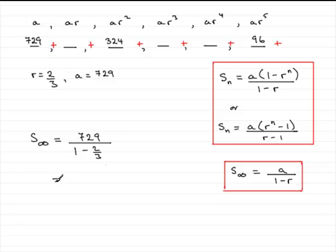And if you work this out, what you get is 2,187. You'll never exceed this number if you add these terms up, but you'll get mighty close to it the more terms you add.